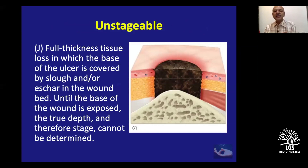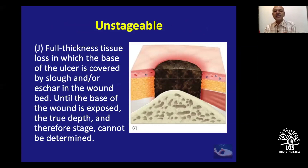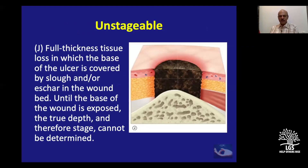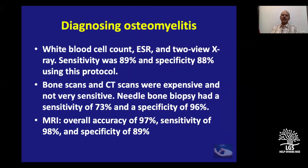The 'unstageable' category (Stage I/J) is full thickness tissue loss where the base of the ulcer is covered with slough or eschar in the wound bed. Unless the wound base is exposed, the true depth and therefore stage cannot be determined. If you find an eschar over a pressure ulcer, you cannot say what stage it is — it may be stage 3 or 4. So you have four stages plus the suspected deep tissue injury stage and the unstageable stage.